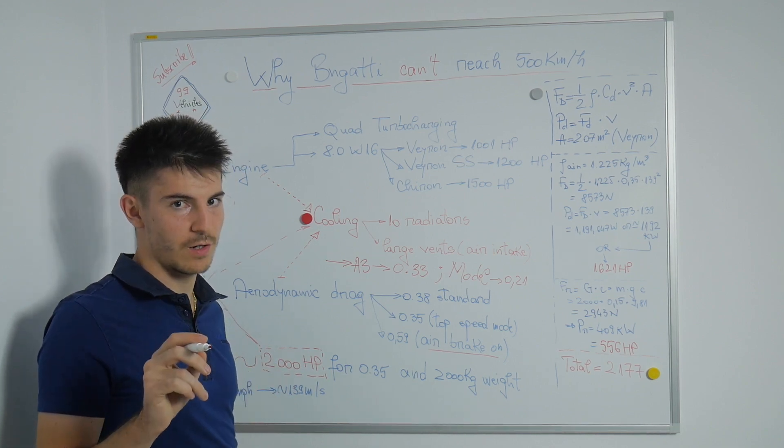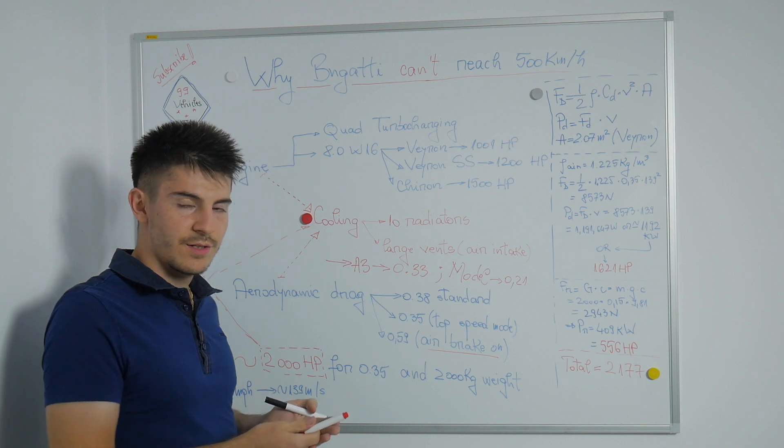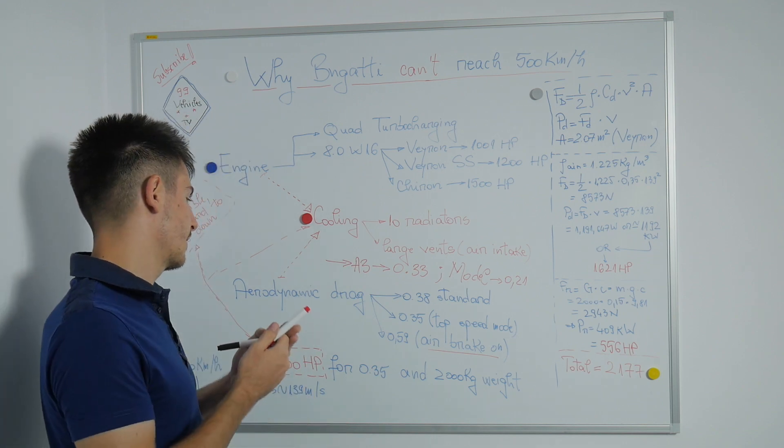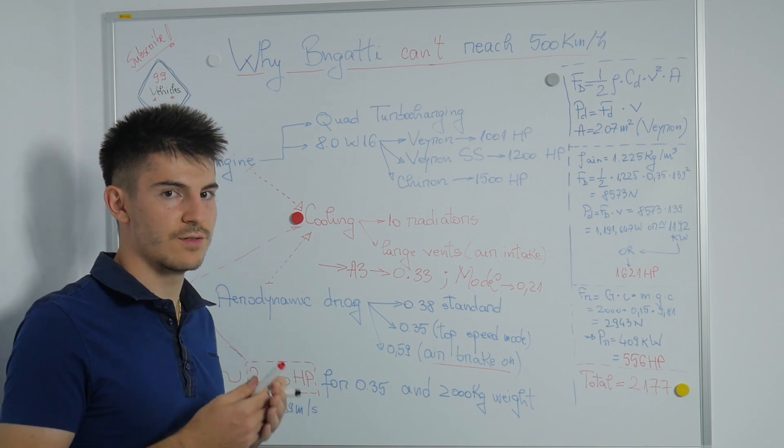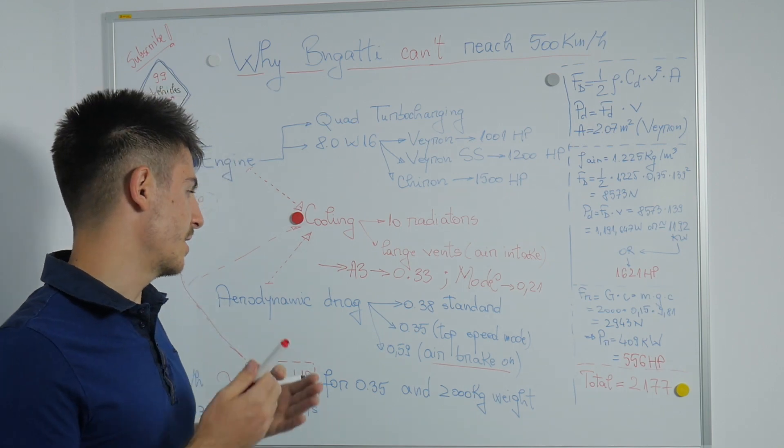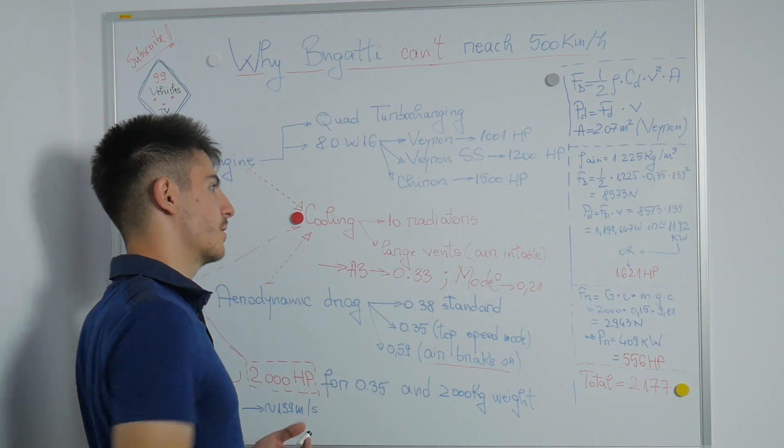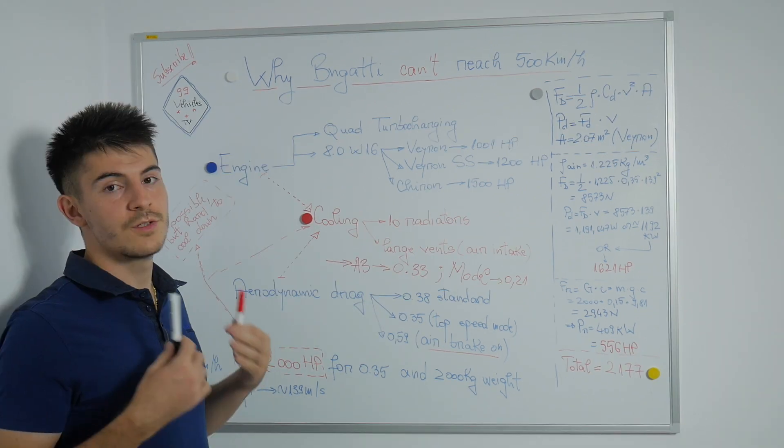Now, for what it is, the Bugatti Chiron has a great drag coefficient because it needs to suck a ton of air in order to cool down the powerful 1,500 horsepower engine.